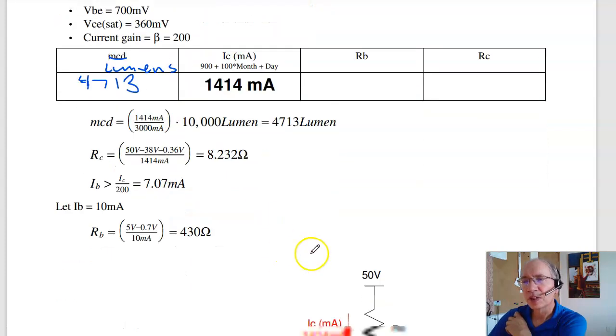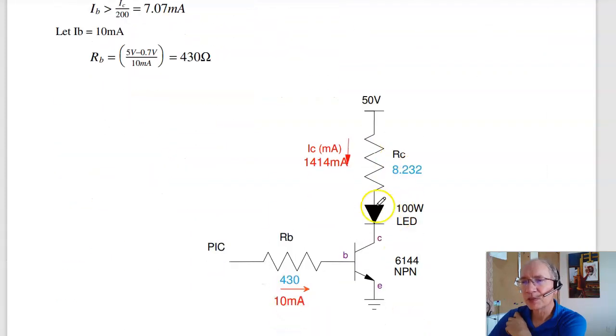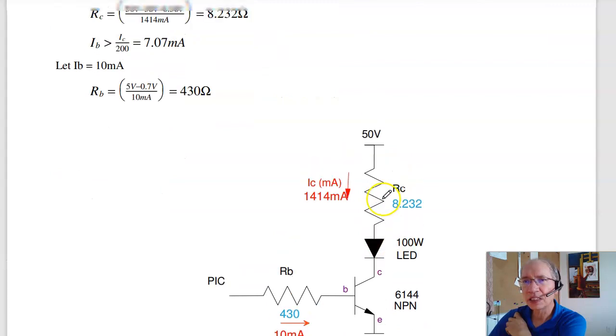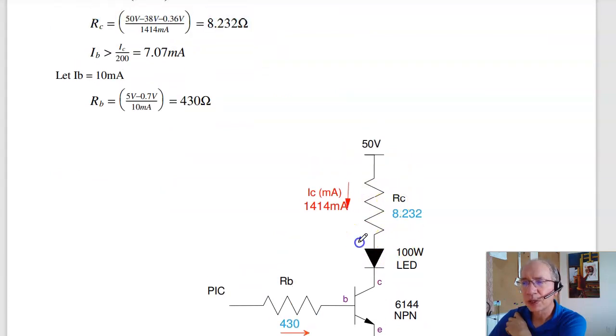To find RC, I've got 50 volts here. The LED drops 38 volts across it. The transistor drops 0.36 volts across it. So the remaining voltage is across RC. That much voltage at 1414 milliamps is 8.23 ohms.